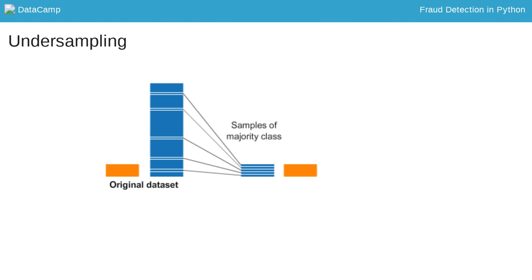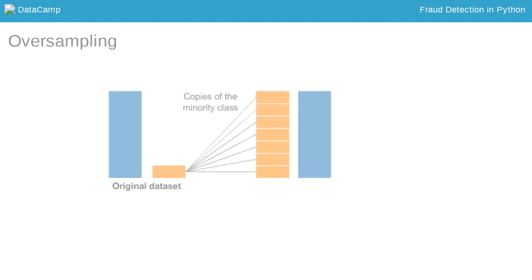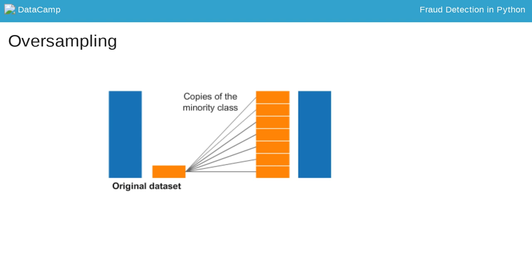With undersampling, you take random draws from your non-fraud observations to match the amount of fraud observations, as seen on the picture. With oversampling, you take random draws from the fraud cases and copy those observations to increase the amount of fraud samples you have in your data. Both methods lead to having a perfect balance between fraud and non-fraud data.